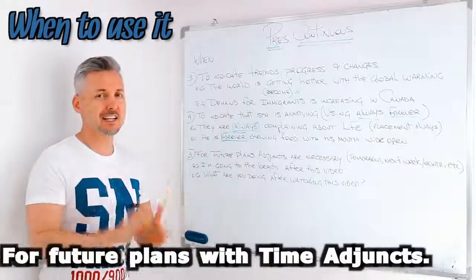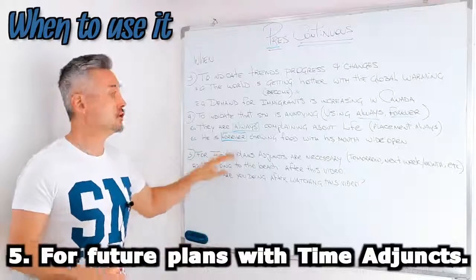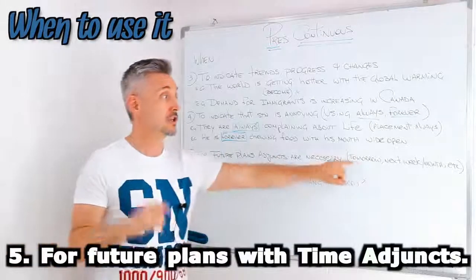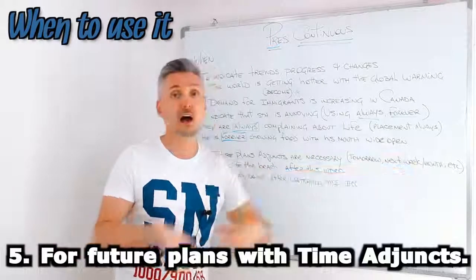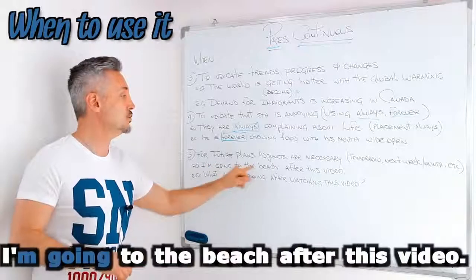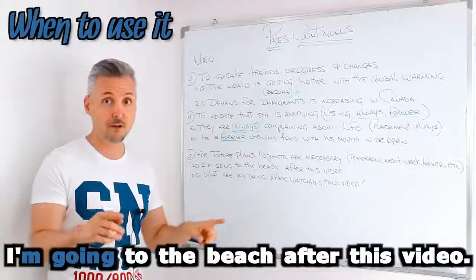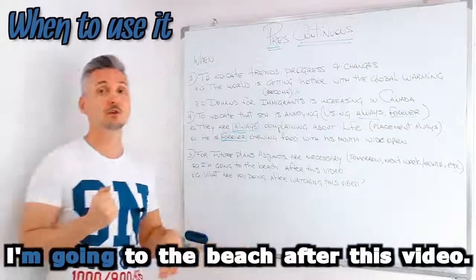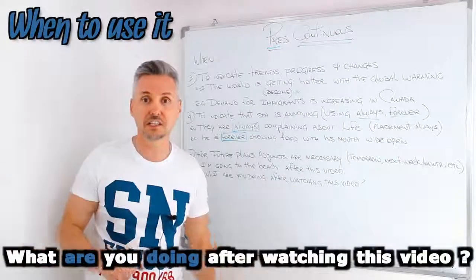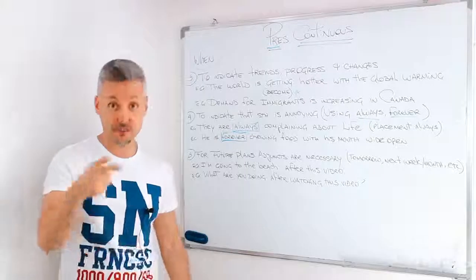The last point, and a very important one: the present continuous is used for future plans. Obviously, you need to use an adjunct like tomorrow, next week, after — just like my example: I'm going to the beach after this video. Not right now, but after this video I'm going to the beach. What are you doing after watching this video? You may leave your comments under the video.